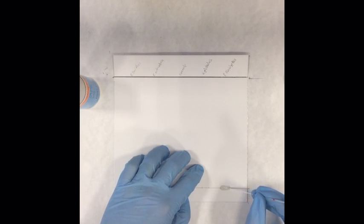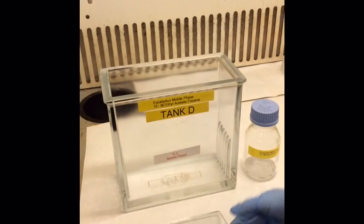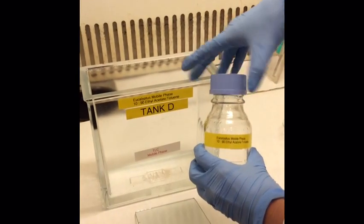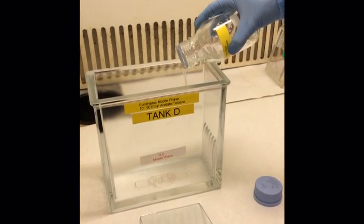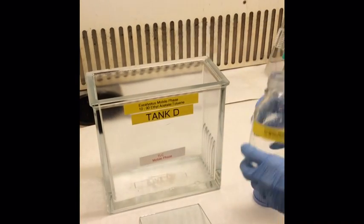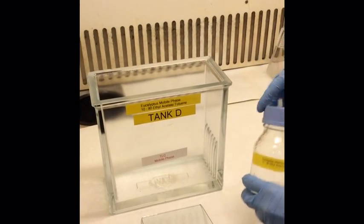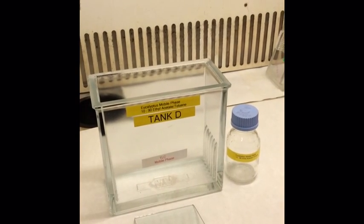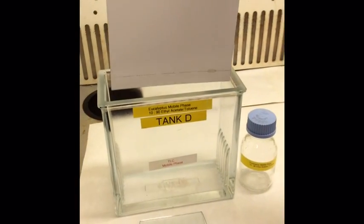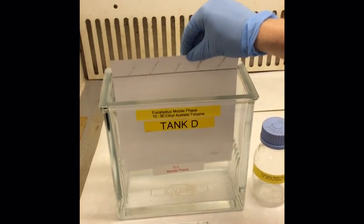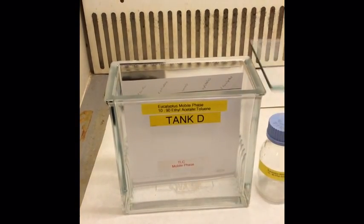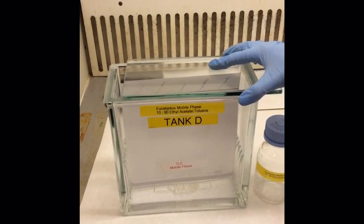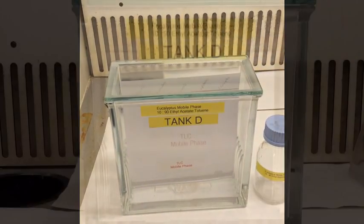Once you've spotted all the different spots on your TLC plate, you can then place your plate inside the TLC tank. Carefully remove the lid of the TLC tank and then add in your mobile phase. Add your TLC plate inside the TLC tank. Once you place the lid on top of the tank, it is important not to open the tank until the plate is fully developed.